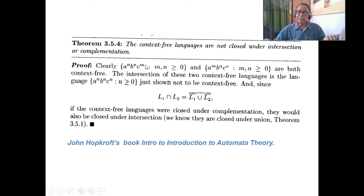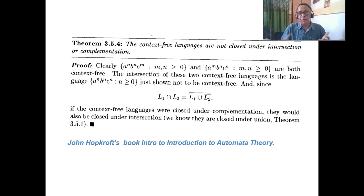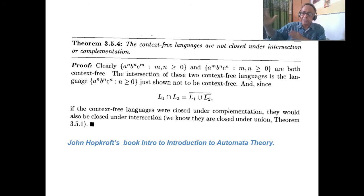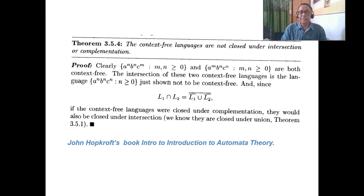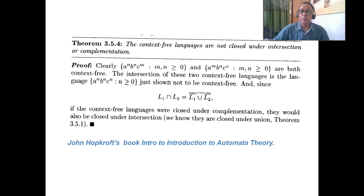A to the power M, B to the power N is a context-free language. Take another language B to the power N, C to the power N — A to the power M is another context-free. If you make an intersection, the language will be A to the power N, B to the power N, C to the power N. But we know that is a context-sensitive grammar. So definitely two context-free grammar intersection may or may not be context-free — we cannot say it will always be context-sensitive.